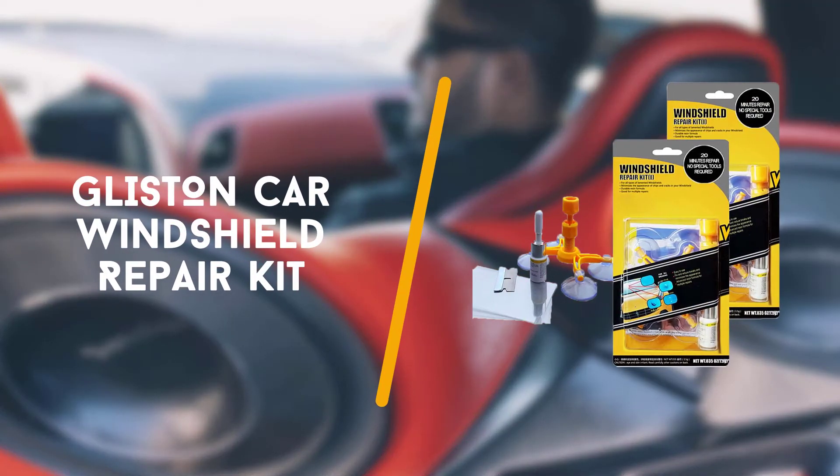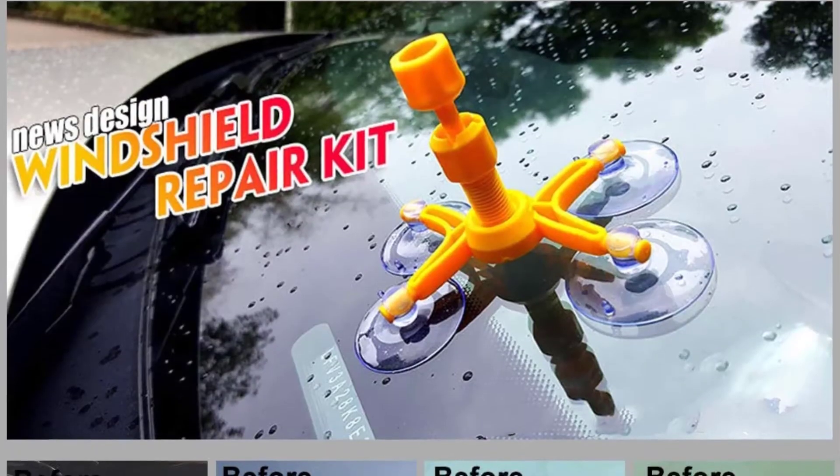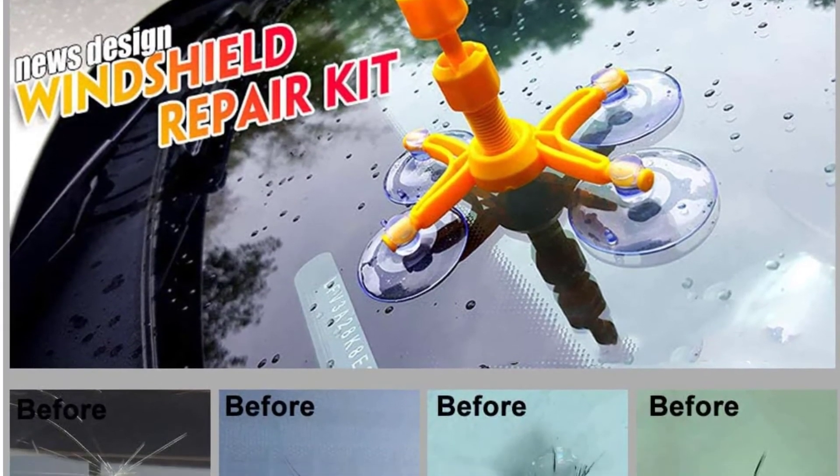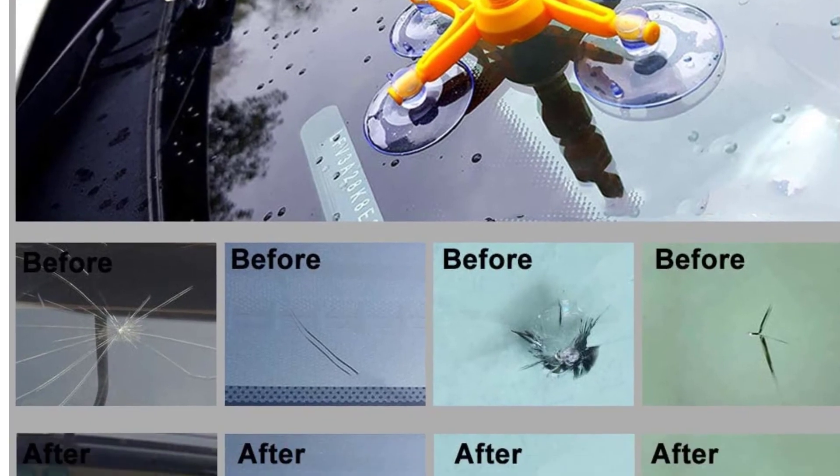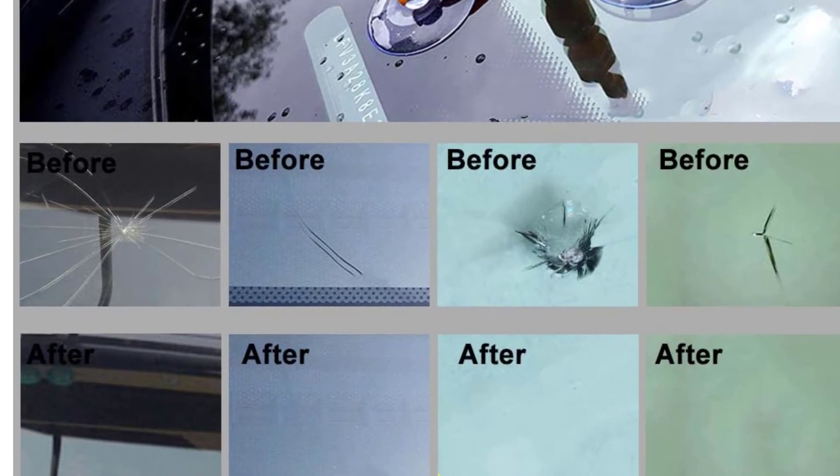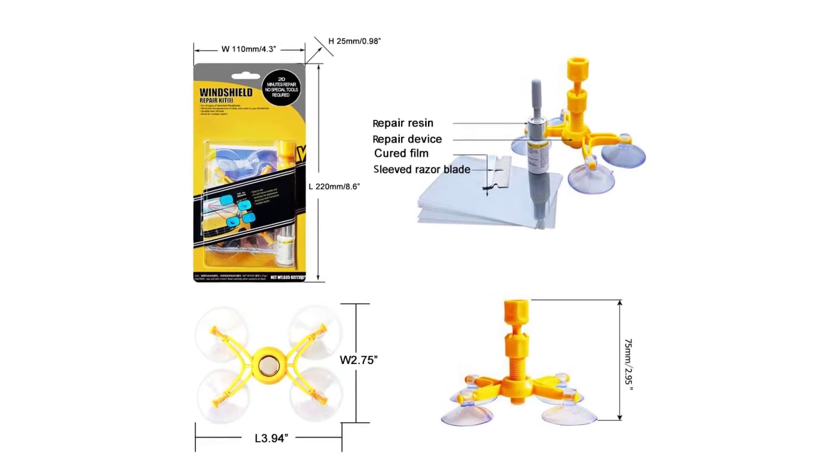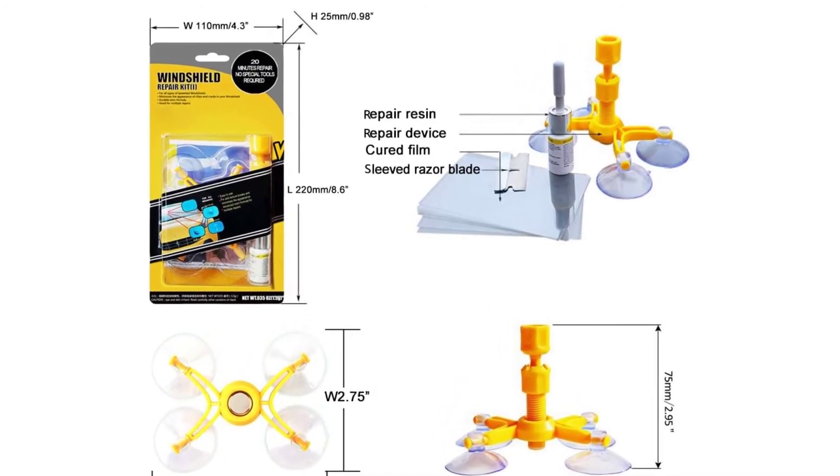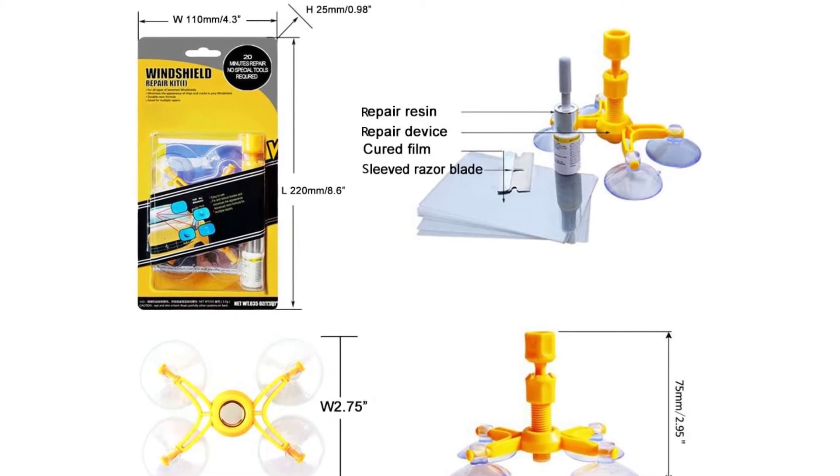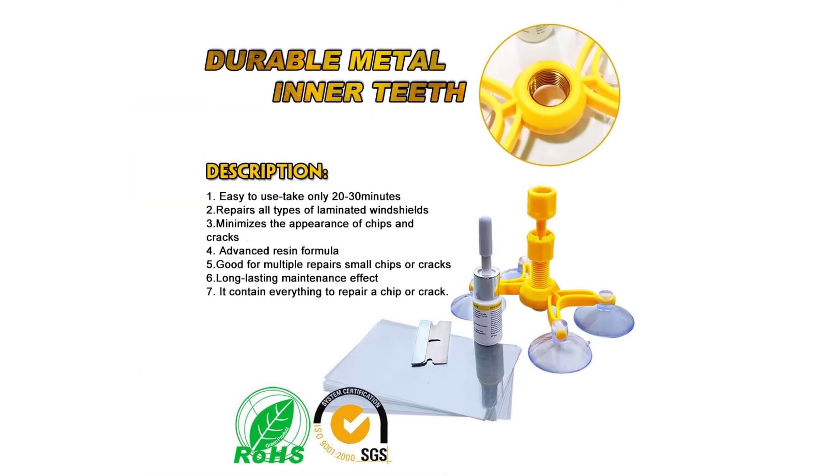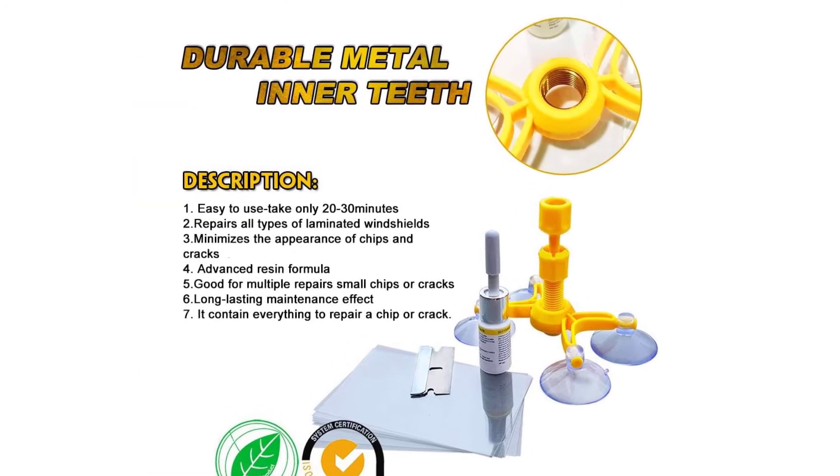4th on the list is the Glisten Car Windshield Repair Kit. Well known for its DIY dent repair kits, Glisten offers a quality windshield repair kit as well. If you have several cracks to deal with on your windshield, you can purchase this kit in a 2-pack, but if you only need to take care of a single flaw, save some money and purchase the 1-pack.